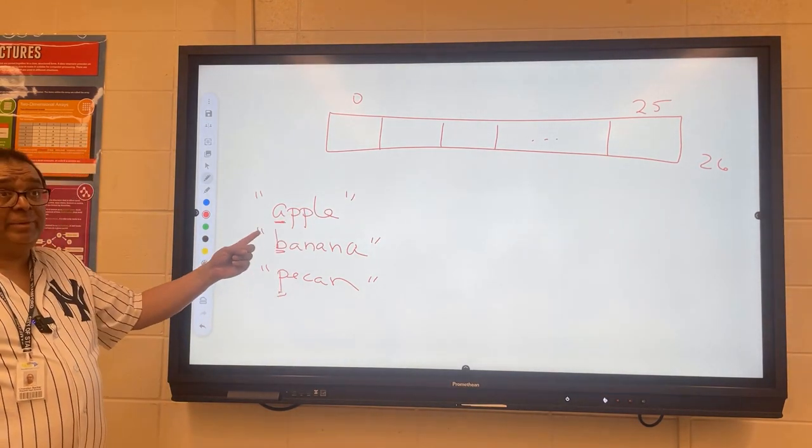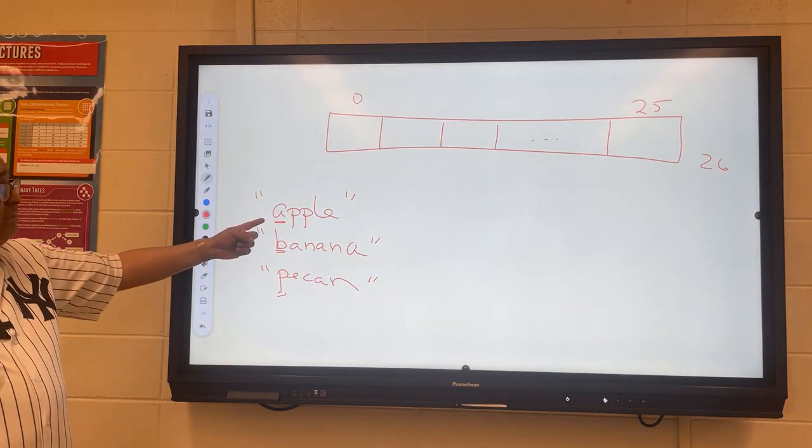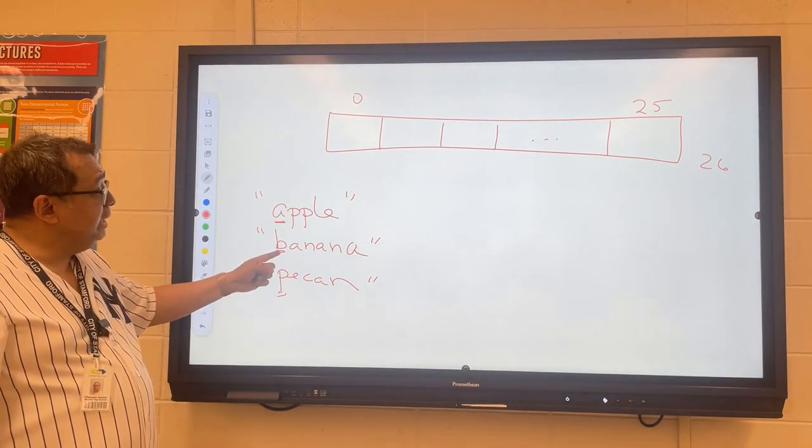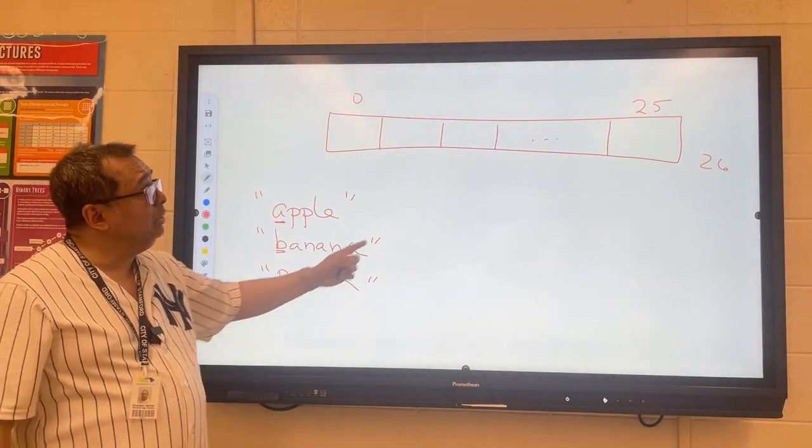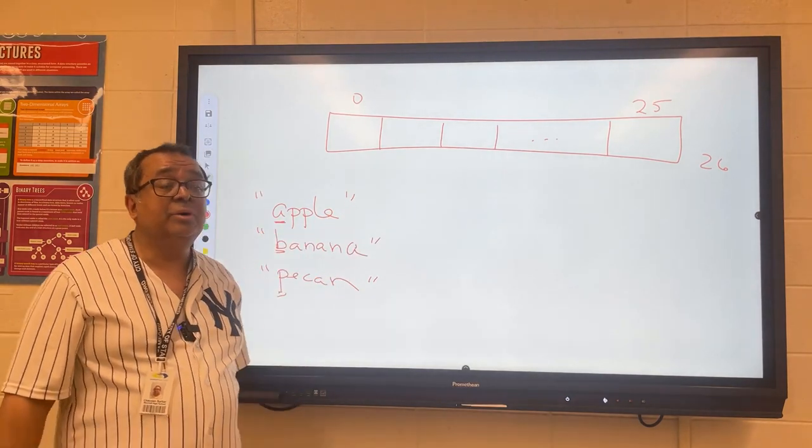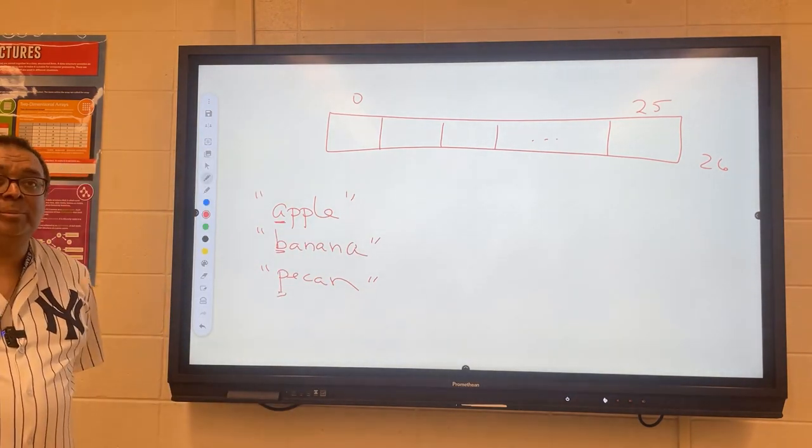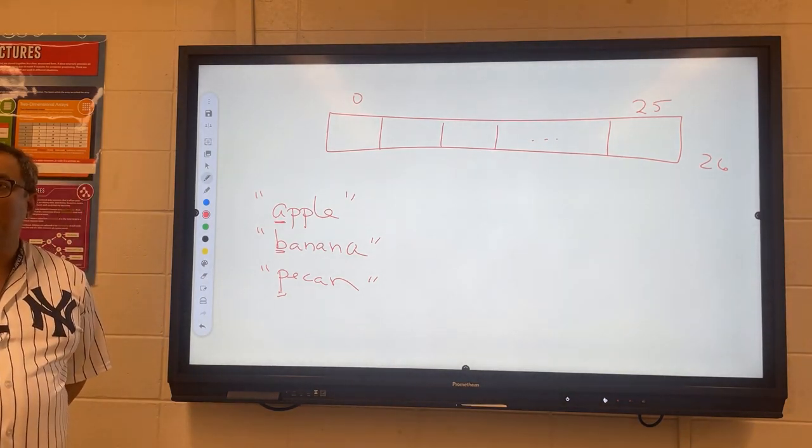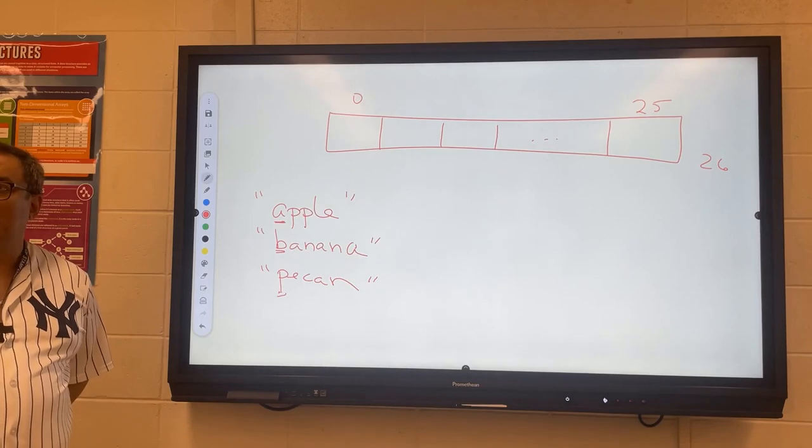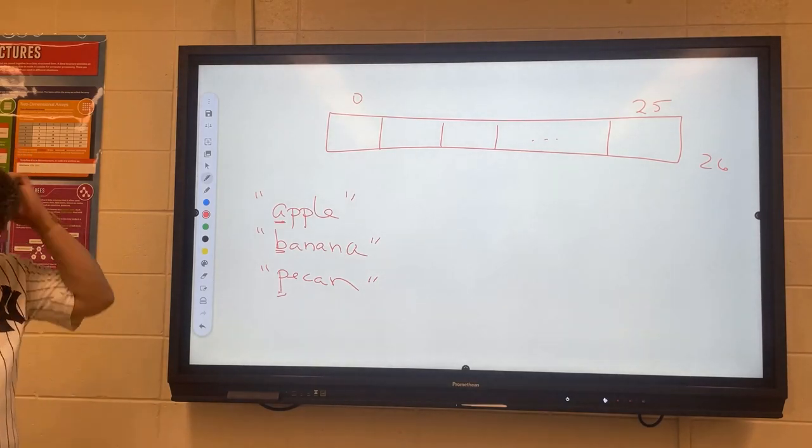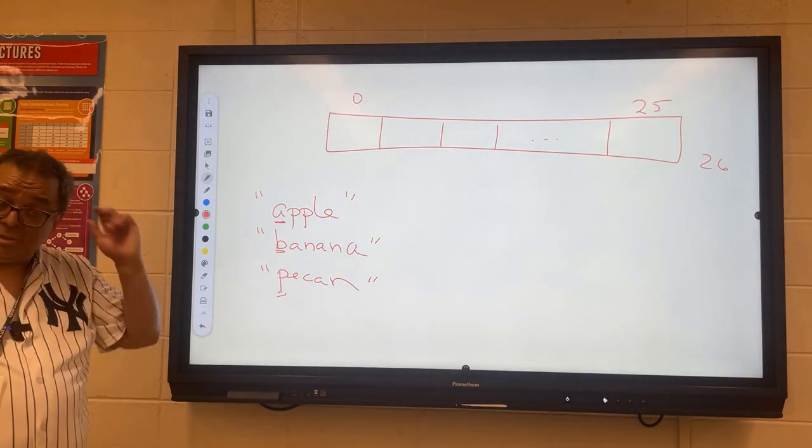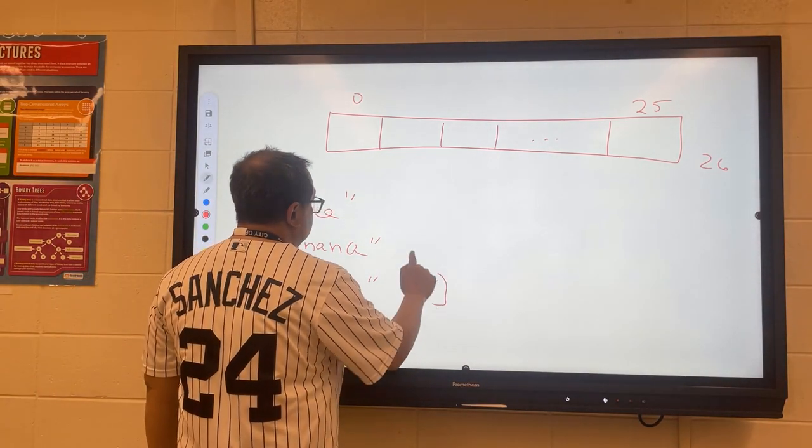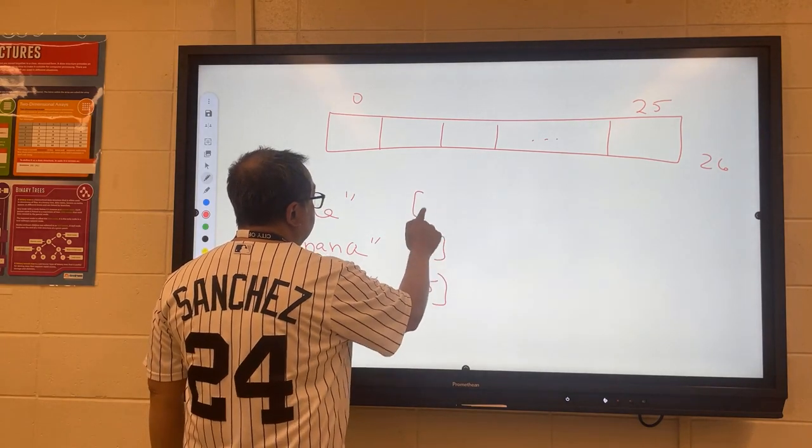So since apple begins with A, we can say that A will have an index of 0, and we can put that over here. B will be over here, but pecan will not be stored in index 2. Do a quick count and figure out where pecan will be stored. You're still counting from 1? I was hoping I had broken you of that habit. It's 15, right? So this would be stored at location 15, this at location 1, and that at location 0.